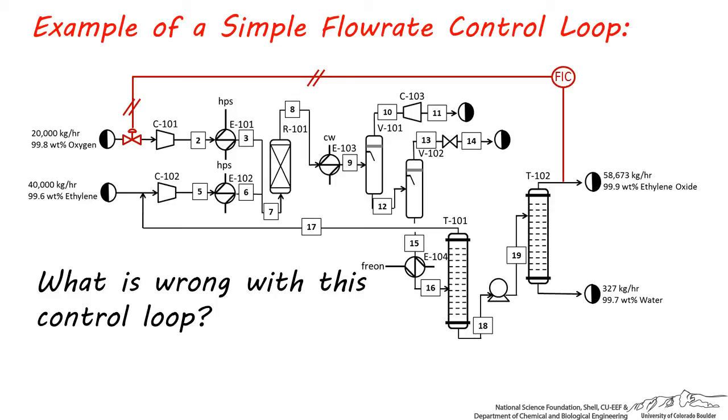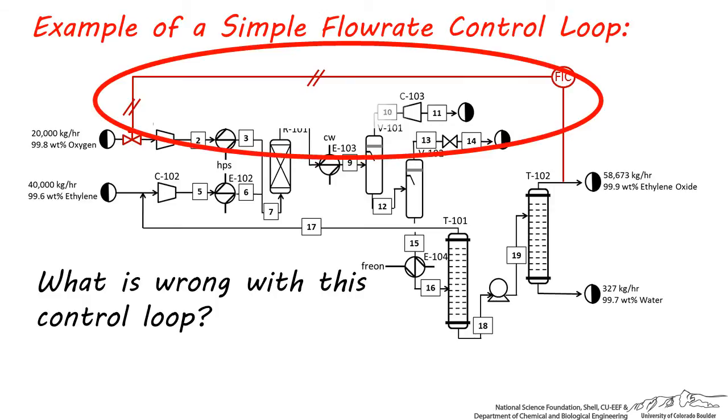One of the main issues here is that it most likely takes 30 to 120 minutes or more for a component to enter the process at the very beginning and make its way all the way through to the exit. This means that if flow rate at the exit is too low or high, the signal is already 30 to 120 minutes too late. This control loop's dead time is just too large.